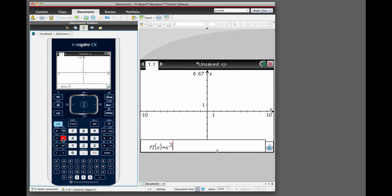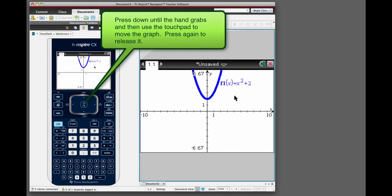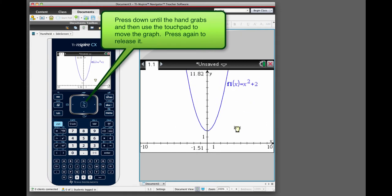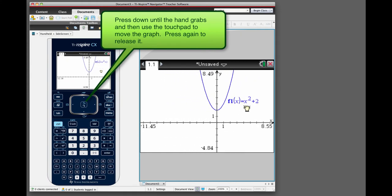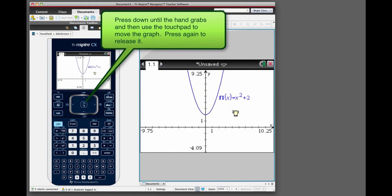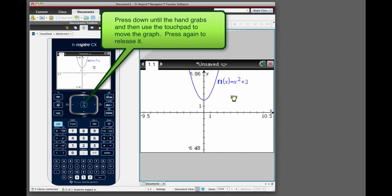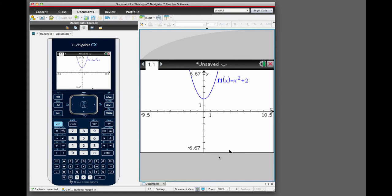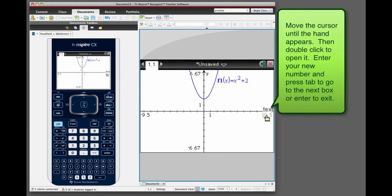And everything on the screen is changeable. You mainly just have to click on it and you're able to change it. So first things first, let's just talk about moving the graph around. You pick an area where the graph isn't, press down the center button until the hand grabs it, and then you can let go and swish it back and forth and move it around and hit escape to get what you want.